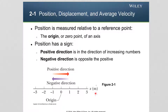We have directions: a positive direction selected to be to the right, and a negative direction selected to be to the left. To the right of the origin we are moving in positive direction; to the left of the origin we are moving in negative direction. Since we have a positive and negative direction, that implies that the position of an object, depending on which side of the origin it is, can be a positive number or a negative number.